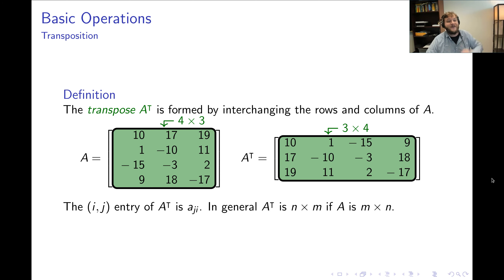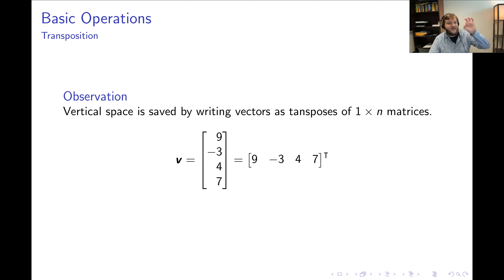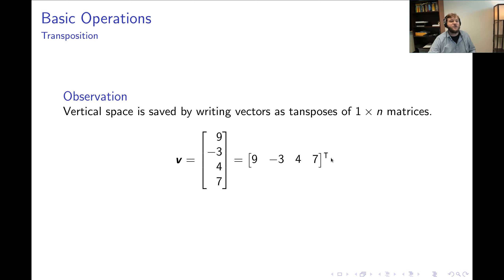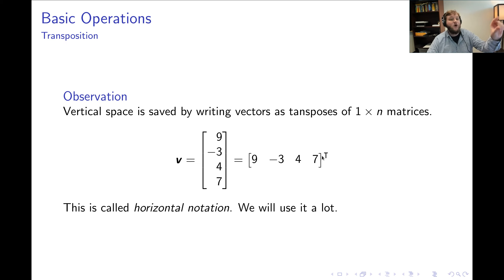When you transpose, you change the size of your matrix. A four by three matrix transposes to a three by four matrix. In general, the transpose of an M by N matrix is always an N by M matrix. One practical use: a vector is just an N by 1 matrix, so to save vertical space we can write it as a row with a transpose superscript. For example, the column vector (9, −3, 4, 7) can be written as [9, −3, 4, 7]ᵀ.